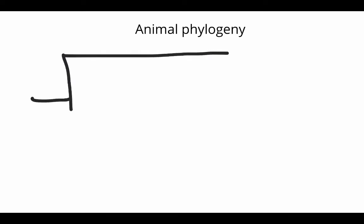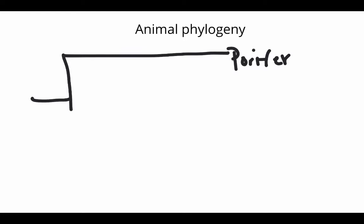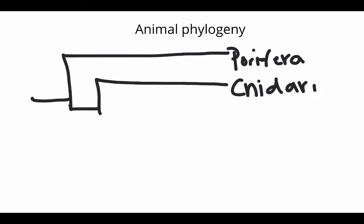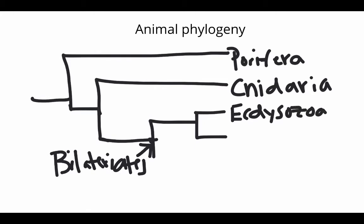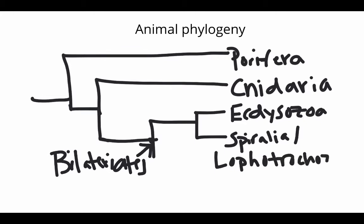I'm going to draw an abbreviated version of this. We did do a more extensive version either in class or in another lecture. I'm going to put Porifera on there — remember that's the sponges — then jump to Cnidaria, things like jellies, sea anemones, sea fans, hydra, and so forth. That's the sister clade to the bilaterate group. There's the last common ancestor of all bilateriates. Then we have two groups we talked about already: the ecdysozoans, the spiralia, also called the Lophotrochozoa, and then the group we're looking at now — deuterostomia.